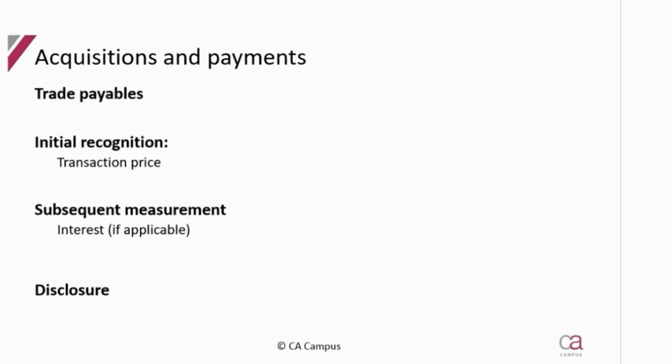So looking at your trade payables, guys: initial recognition at transaction price or at the cost, including those additional amounts that get to be included. Subsequent measurement - there is only for if there is potentially interest, and ultimately if there has been payment made to that trade creditor, the fact that that needs to be removed from the balance. Also here, if it's a foreign creditor, it has to be remeasured at year end to the closing rate.